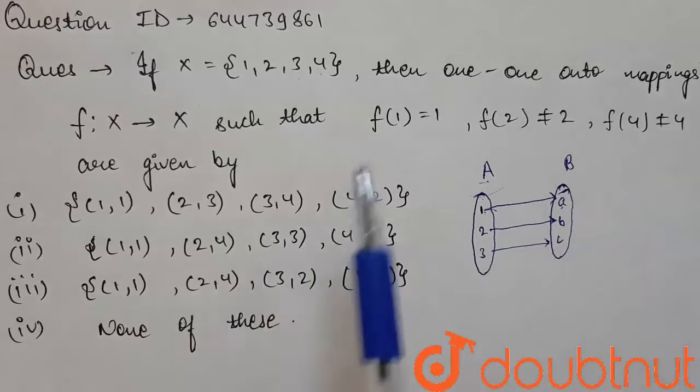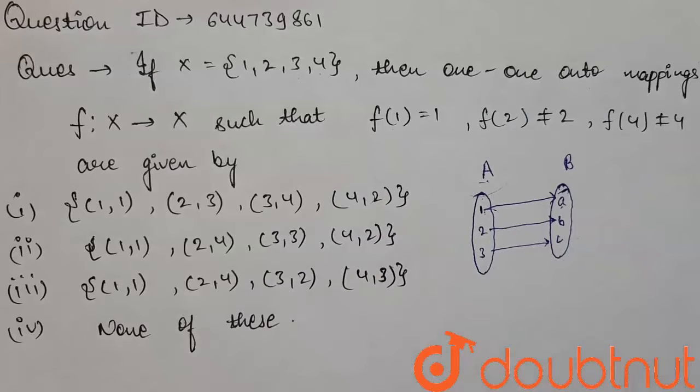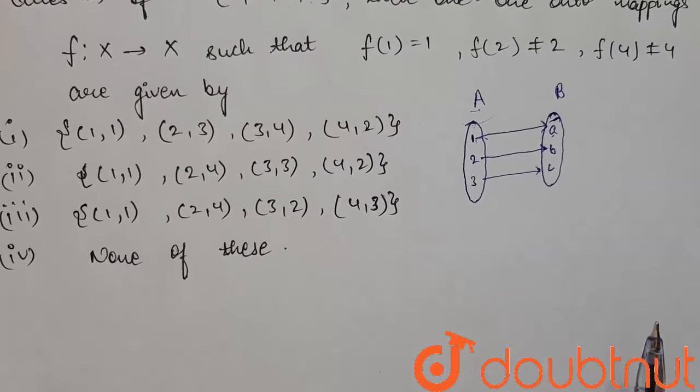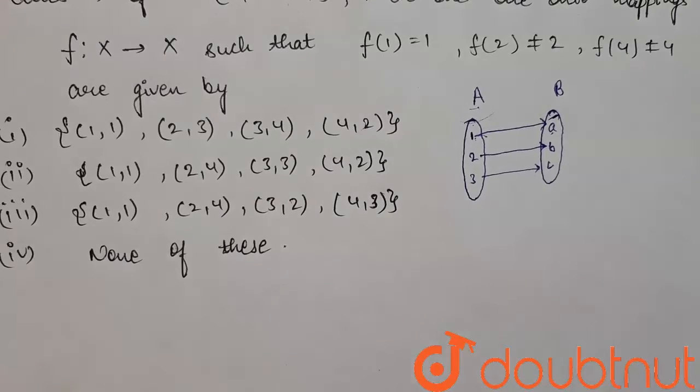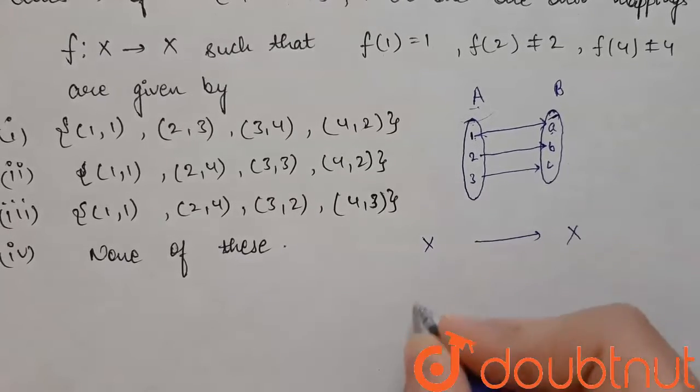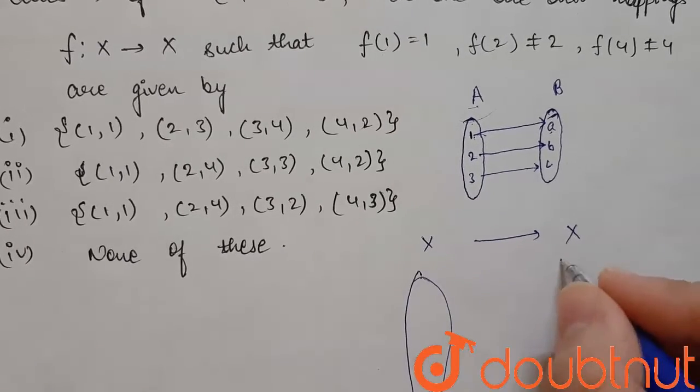So here it is given to us that f(1) = 1, f(2) ≠ 2, and f(4) ≠ 4. So we have to find from x to x, the elements of x are 1, 2, 3, and 4.